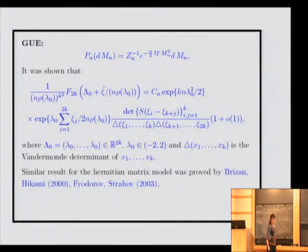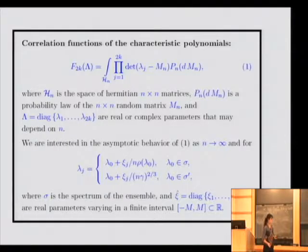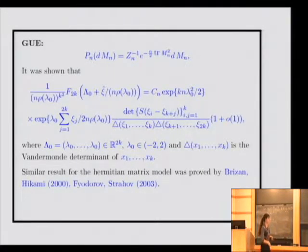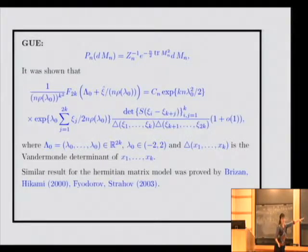Here λ_0 lies in (-2, 2), because (-2, 2) is the spectrum of this matrix. This is the bulk of the spectrum. And Δ(ξ) is a Vandermonde determinant of ξ. The ξ are the deviations — small deviations — yes, it's small because we divide by n, but ξ itself is finite.